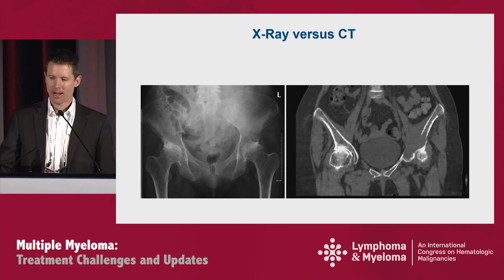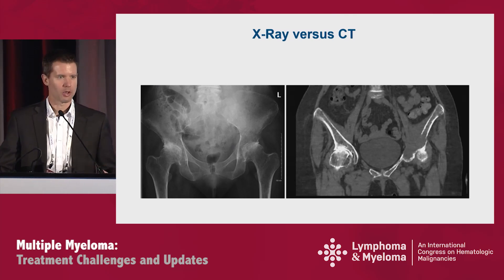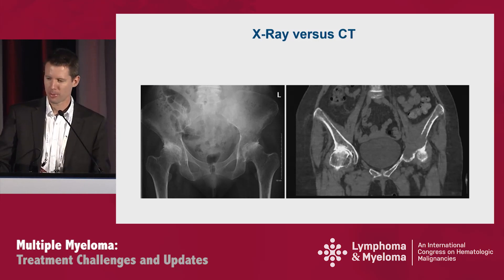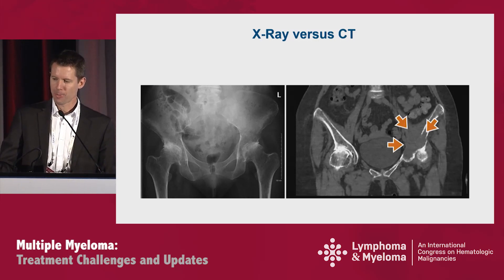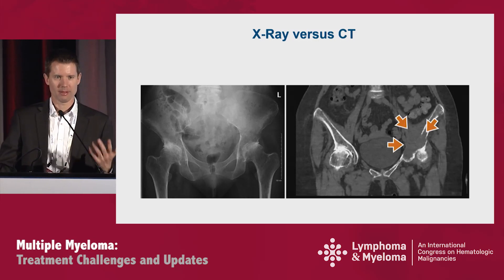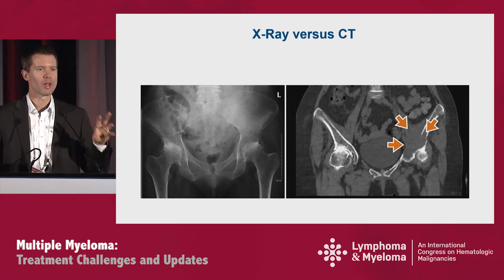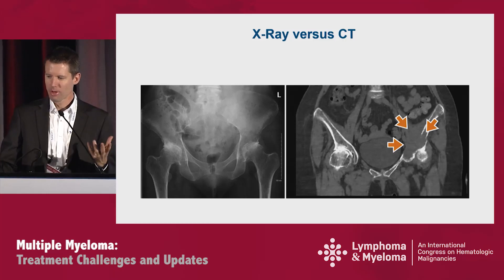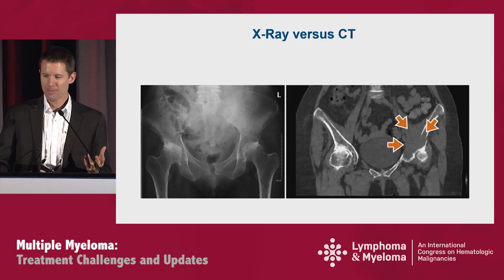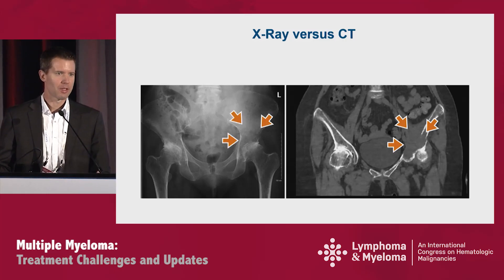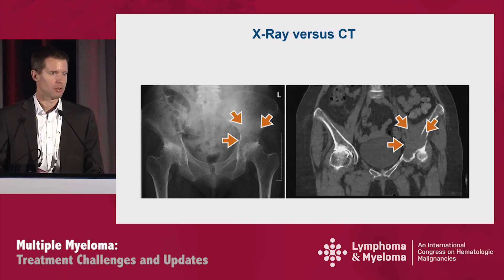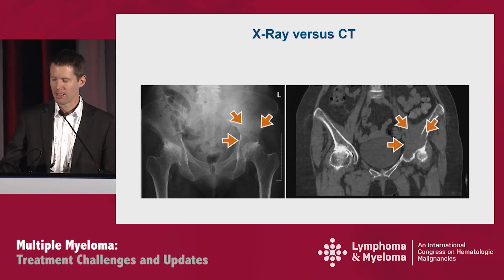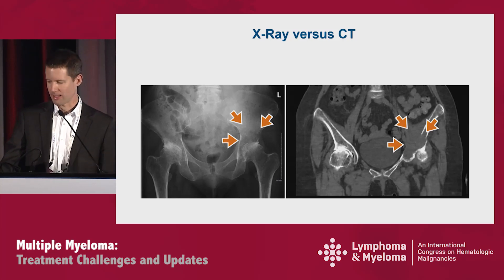This is a patient I just saw recently who is now going for transplant. She came with an X-ray and had pain in her hip. We did a CT, and you can see there is myeloma actually growing out of the bone — there's not really much bone left in that area. If you look at the X-ray, I would not have seen this tumor. So we have to do better than just X-ray. We did a comparison with collaborators worldwide and found that about 25% of cases are negative on X-ray but positive on CT.